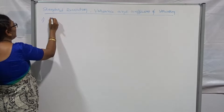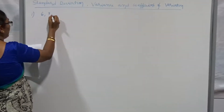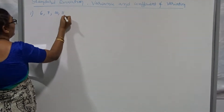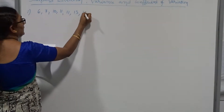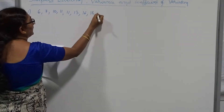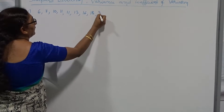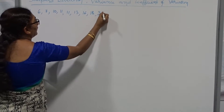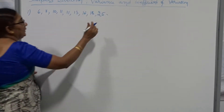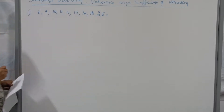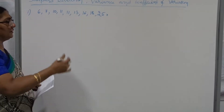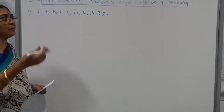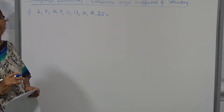The first example is: suppose the data is 6, 7, 10, 11, 13, 16, 18, and 25. I want to find out the standard deviation and coefficient of variation. Now if you want to find out the standard deviation and coefficient of variation, in all the cases we first find the mean.